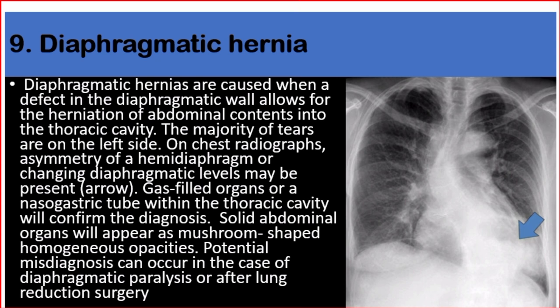Number nine: diaphragmatic hernia. Diaphragmatic hernias are caused when a defect in the diaphragmatic wall allows herniation of abdominal contents into the thoracic cavity. The majority of tears are on the left side. On chest radiographs, asymmetry of a hemidiaphragm or changing diaphragmatic levels may be present. Gas-filled organs or a nasogastric tube within the thoracic cavity will confirm the diagnosis. Solid abdominal organs will appear as mushroom-shaped homogenous opacities. Potential misdiagnosis can occur in cases of diaphragmatic paralysis or after lung reduction surgery.